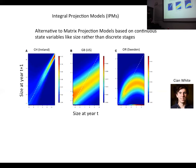Even with preliminary data, we can see important differences across the range in the demography of the species. For example, in Ireland, large plants are able to grow or at least maintain their large sizes to the next year, but in Sweden, when plants attain large sizes, they tend to get smaller.